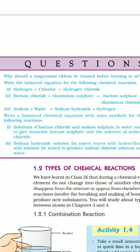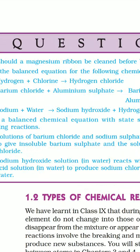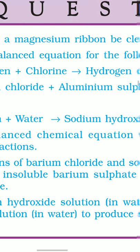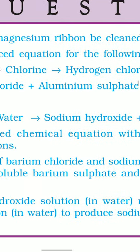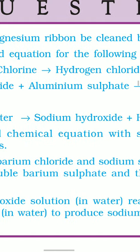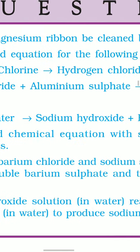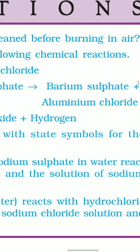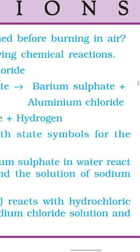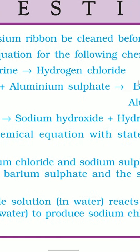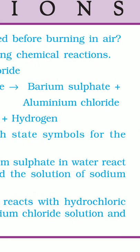Next question: Write the balanced equation for the following chemical reactions. Hydrogen plus chlorine arrow hydrogen chloride. The answer is H2 plus Cl2 arrow 2HCl. Barium chloride plus aluminum sulfate gives barium sulfate and aluminum chloride. 3BaCl2 plus Al2(SO4)3 gives 3BaSO4 plus 2AlCl3.